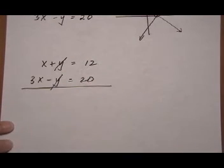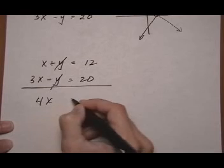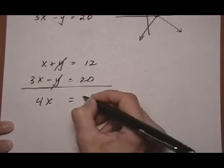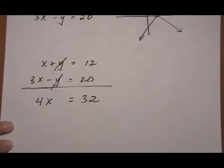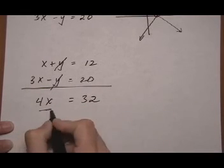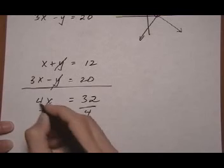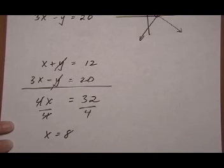And that goes away. And if we add the left side we get 4x, and the right side would give us 32. 4x equals 32, divide by 4 both sides. We get x equals 8.